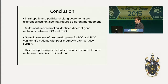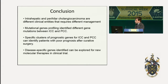In conclusion, intrahepatic and perihilar cholangiocarcinoma are different clinical entities that require different management. The mutational gene profiling identifies different gene mutations between intrahepatic and perihilar cholangiocarcinoma. A specific cluster of prognostic genes for intrahepatic and perihilar cholangiocarcinoma can identify patients with poor prognosis after curative surgery, and the disease-specific genes identified can be explored for new molecular therapies in clinical trials.